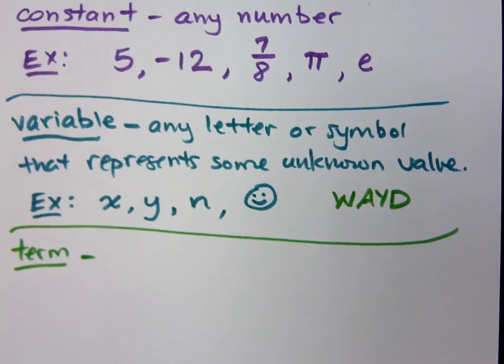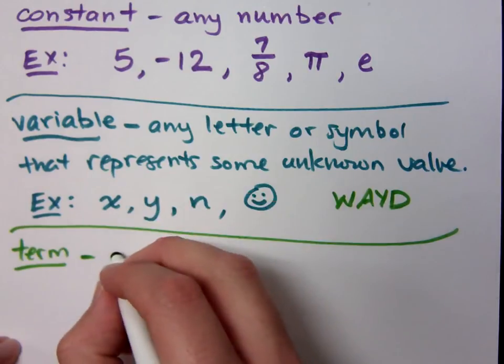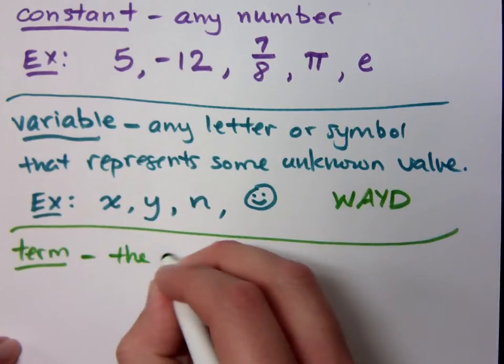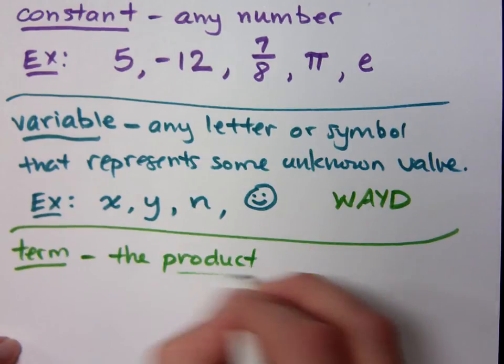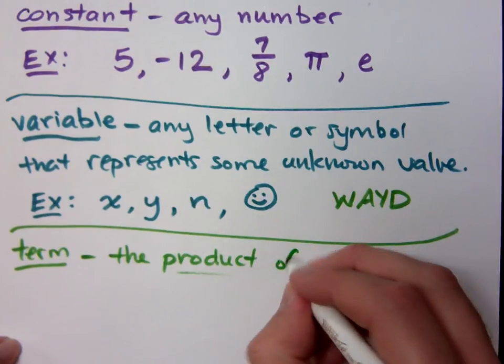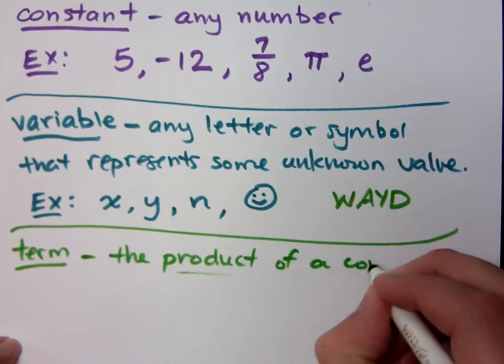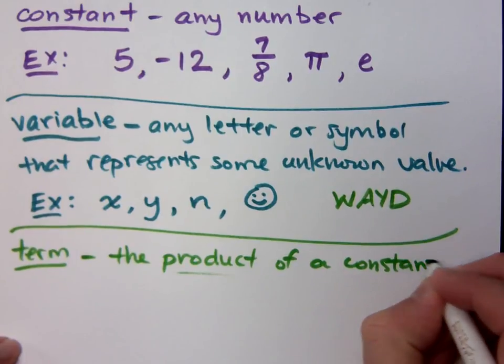You guys okay with the definition for a constant and variable? Let's talk about what it means to be a term. What is a term? It's one equation on the side of an operation symbol. Okay, it's kind of like that. No, it's a combination of constants and variables. But it's a combination like this, though. A term is the product. What does the word product mean? Right, the word product means multiplication. So it's the product of a constant.